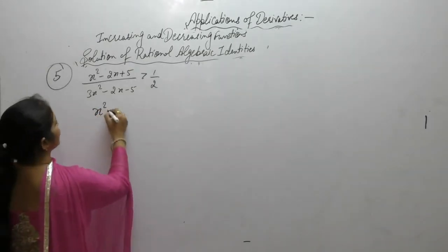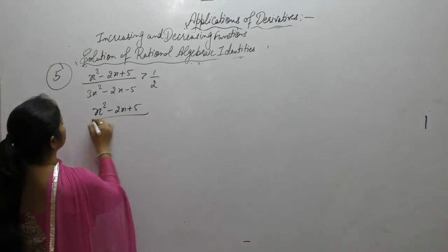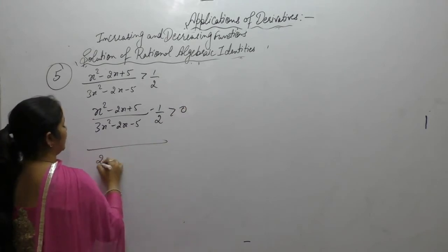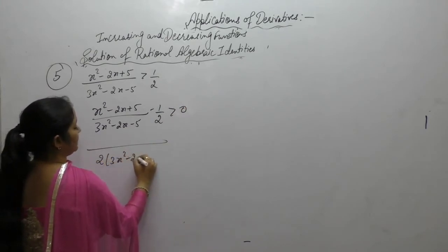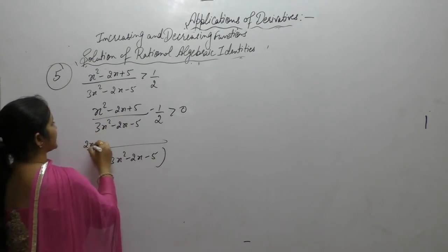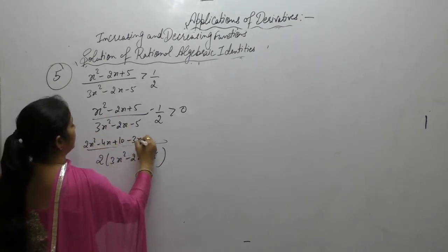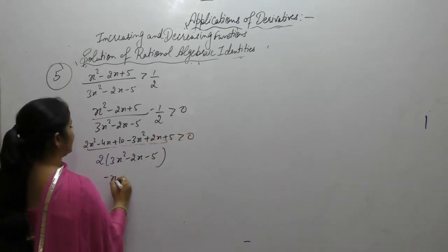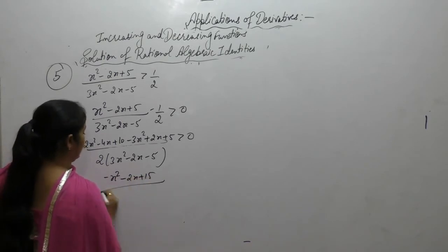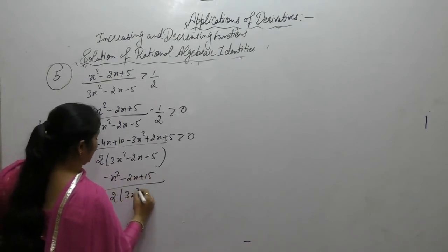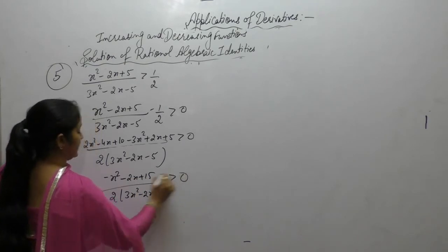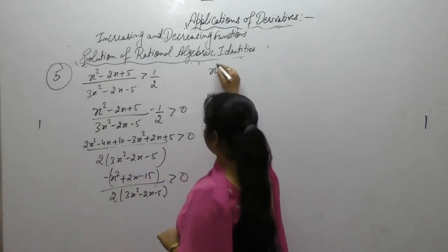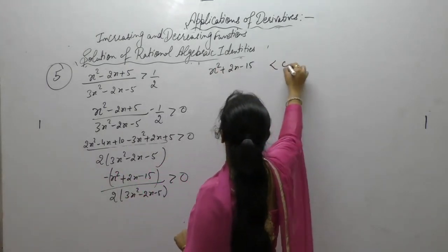Problem 5: solve (x² − 2x + 5) over (3x² − 2x − 5) less than minus 1/2. Taking LCM and combining: numerator becomes minus x² minus 2x plus 15, denominator 2(3x² − 2x − 5). Taking negative common changes sign to greater than 0, then becomes less than 0 after rearranging.